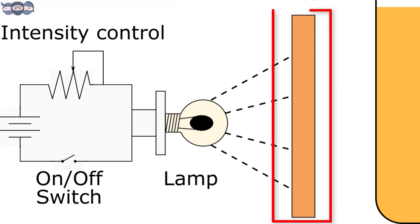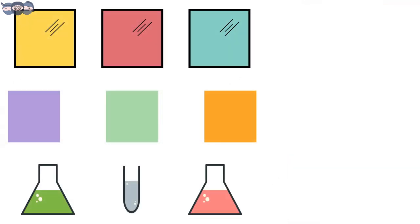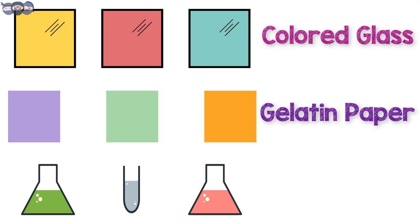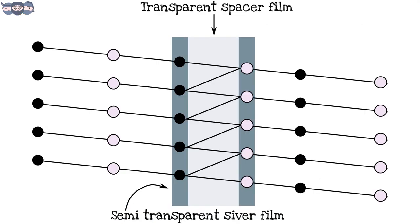The next component is a filter. It can be a basic absorption filter made of material like colored glass, colored gelatin paper or even a colored solution. Interested viewers can go and check our exclusive video on filters. The link for the same is given in the description. The other filter that can be used is an interference filter.